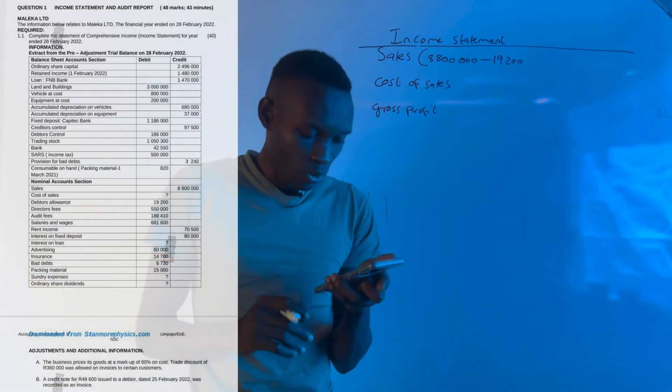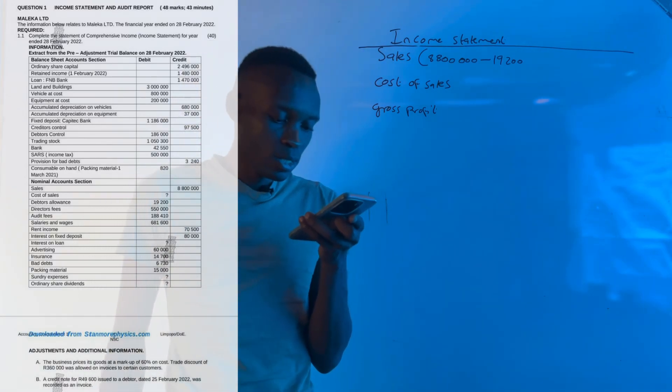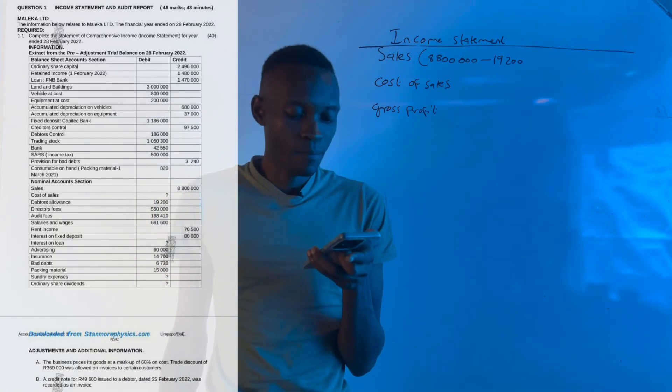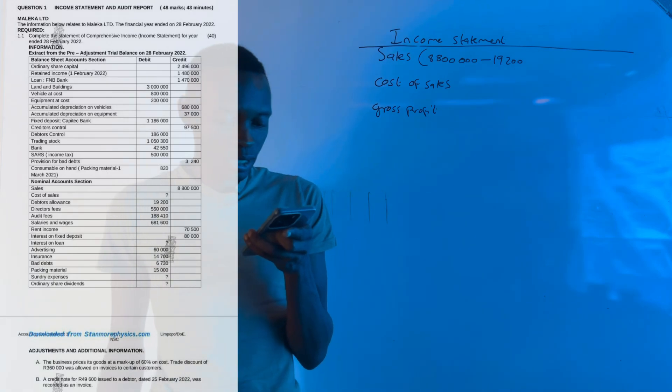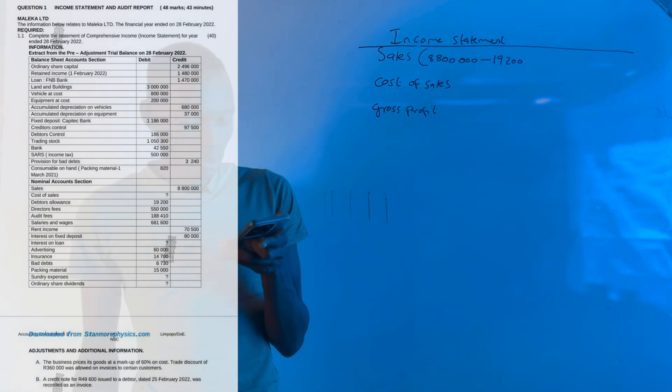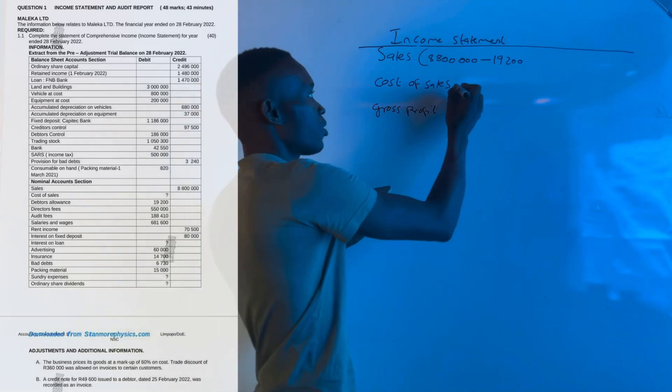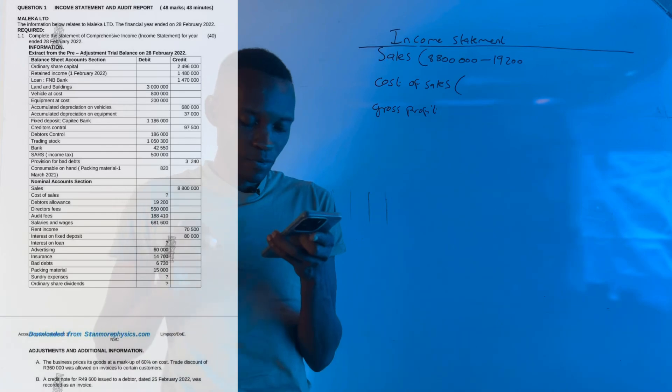We're not done. We have to check information number one: the business prices goods at a markup of 60% on cost, and a trade discount of 360 was allowed on invoice to certain customers. The cost of sales amount is not given, but they give us a markup.